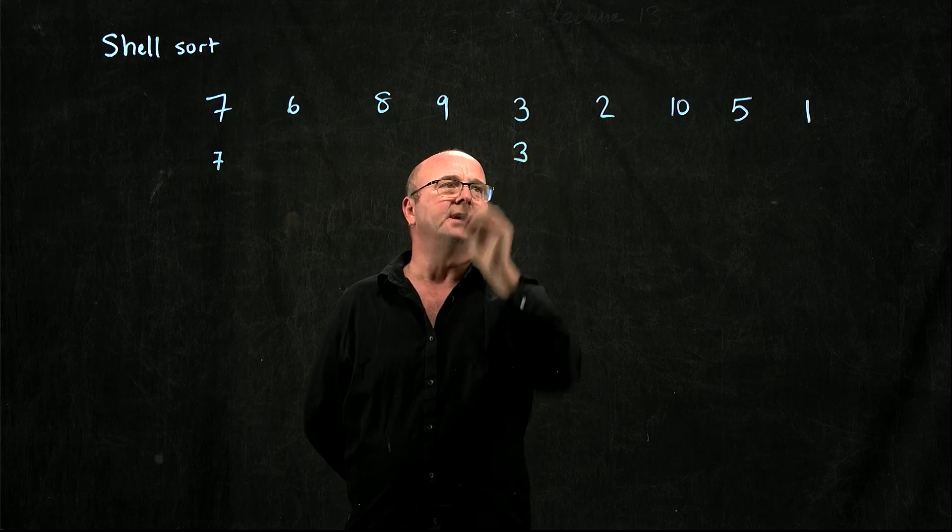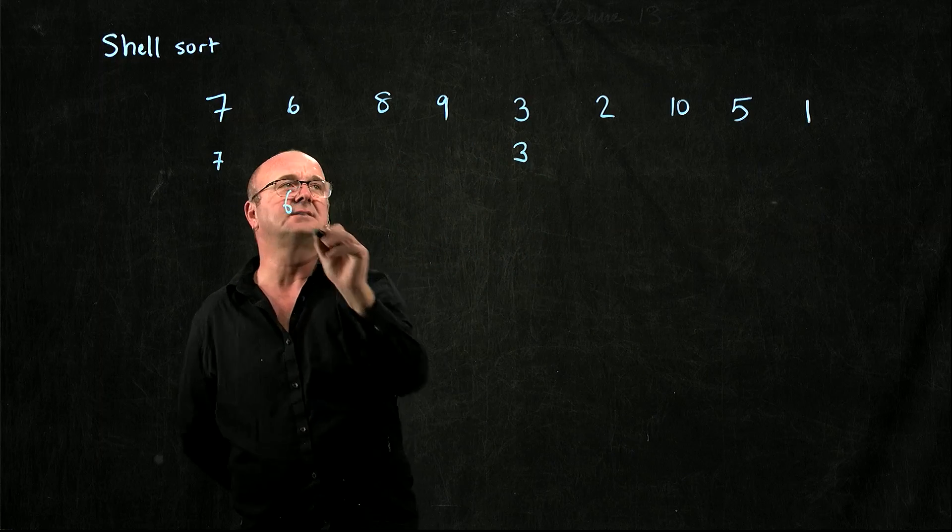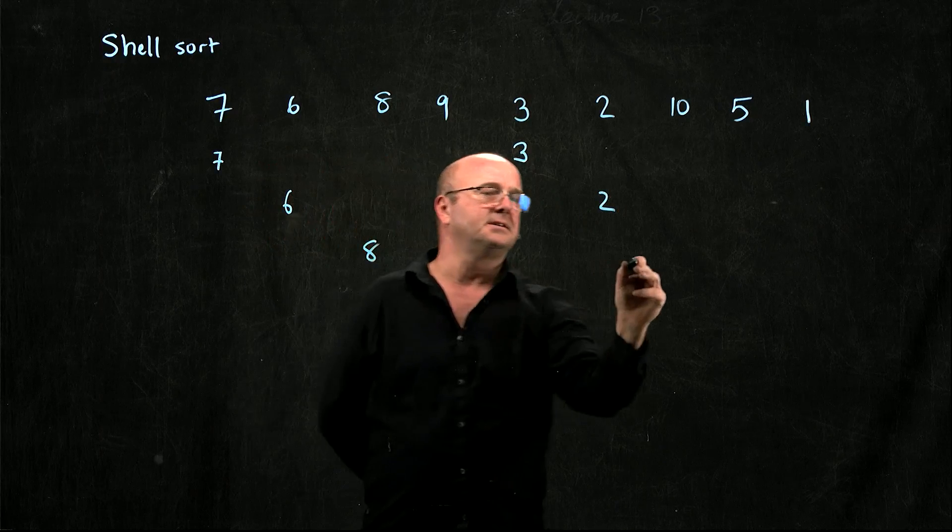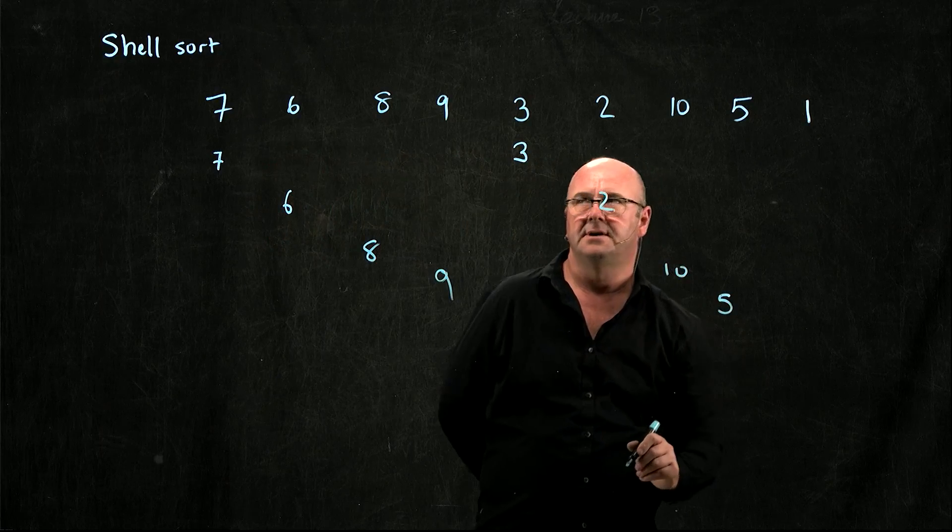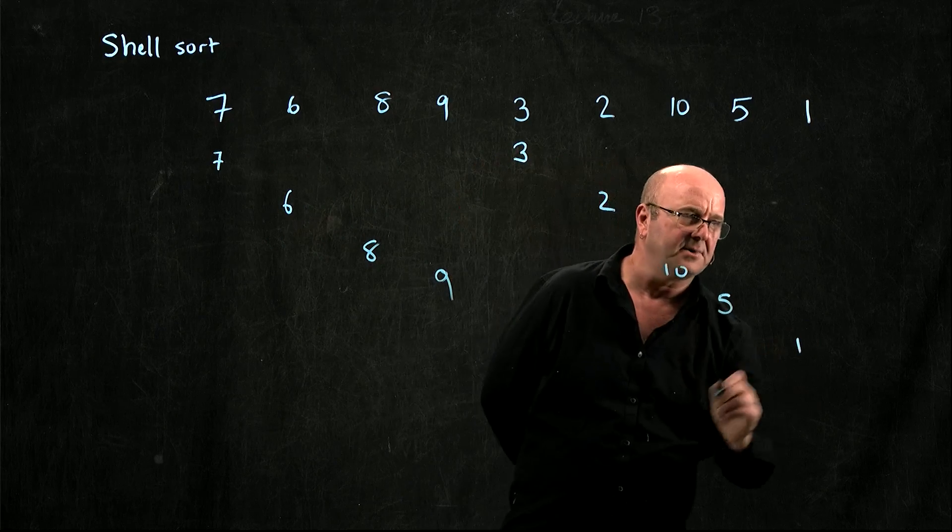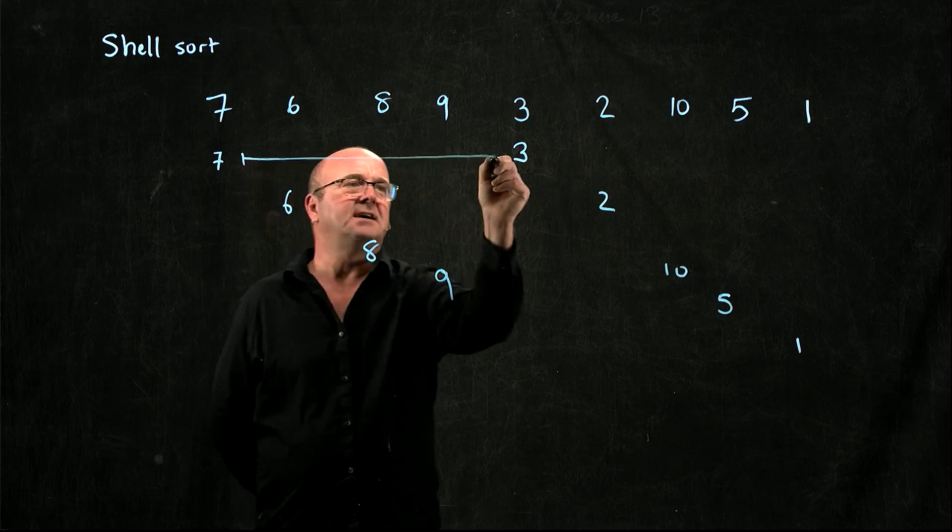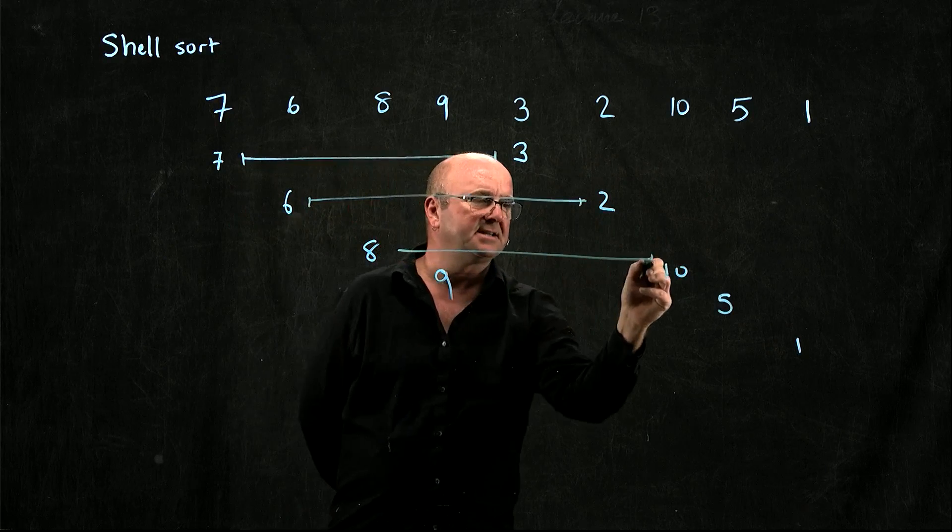So then I take the 3. Then I take the 6 and the 2, the 8 and the 10, the 9 and the 5, and the 1 is on its own. The idea is that I always have the same gap between these pairs of numbers.